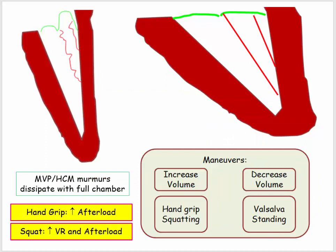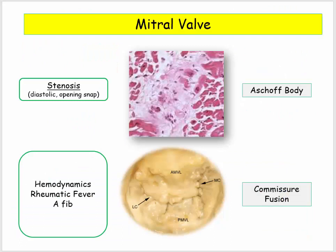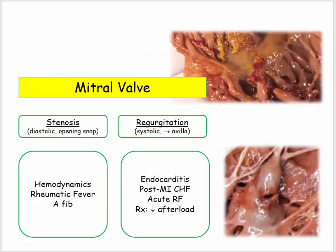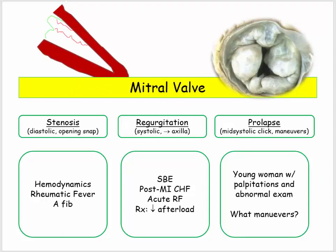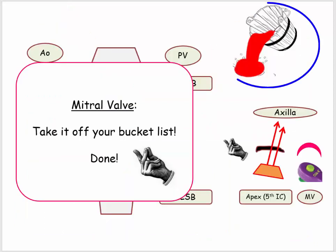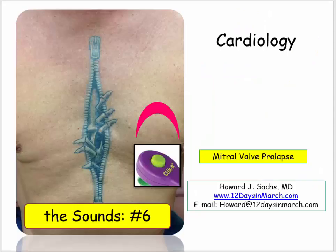Here is a summary. First, we reviewed mitral stenosis — the trickiest of the bunch due to the variety of derivatives, including altered hemodynamics, association with rheumatic fever, and complicating atrial fibrillation. Then we covered mitral regurgitation, focusing on endocarditis and myocardial infarction. Our discussion concluded with mitral valve prolapse, focusing on the characteristic demographic presentation and physical exam maneuvers. And now you can take mitral valve off your bucket list. If you have any questions, please email me at 12 Days. Thank you.